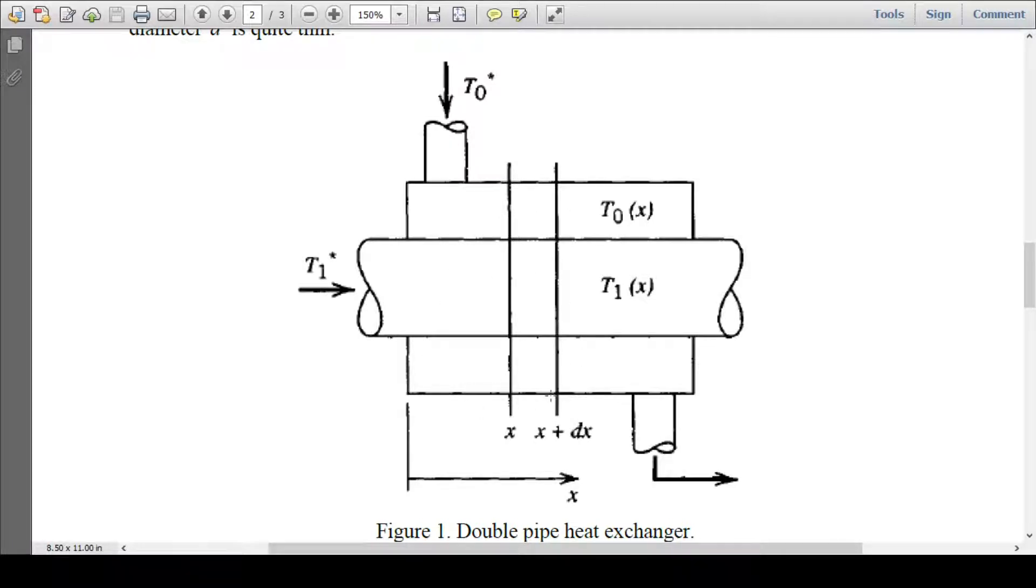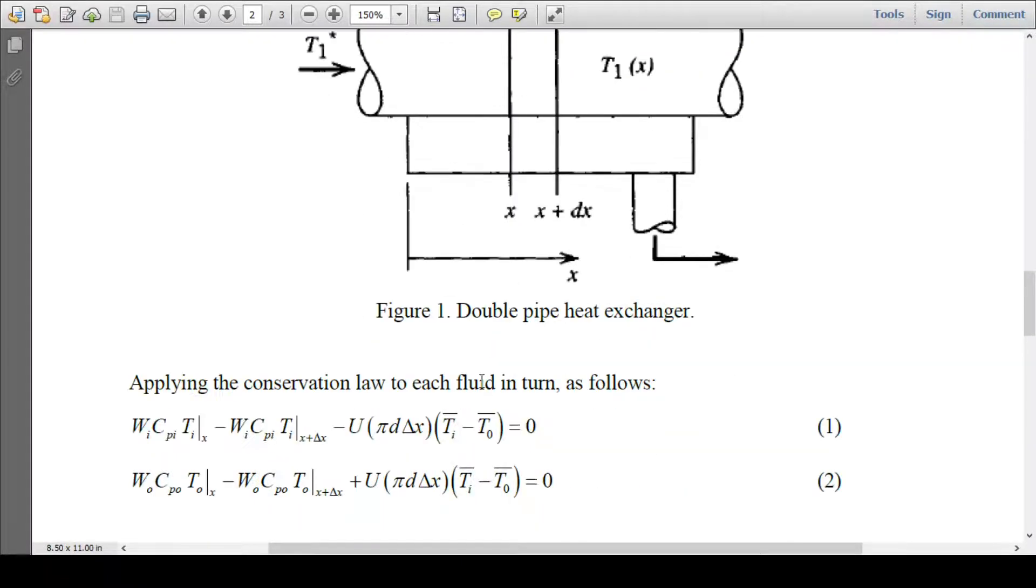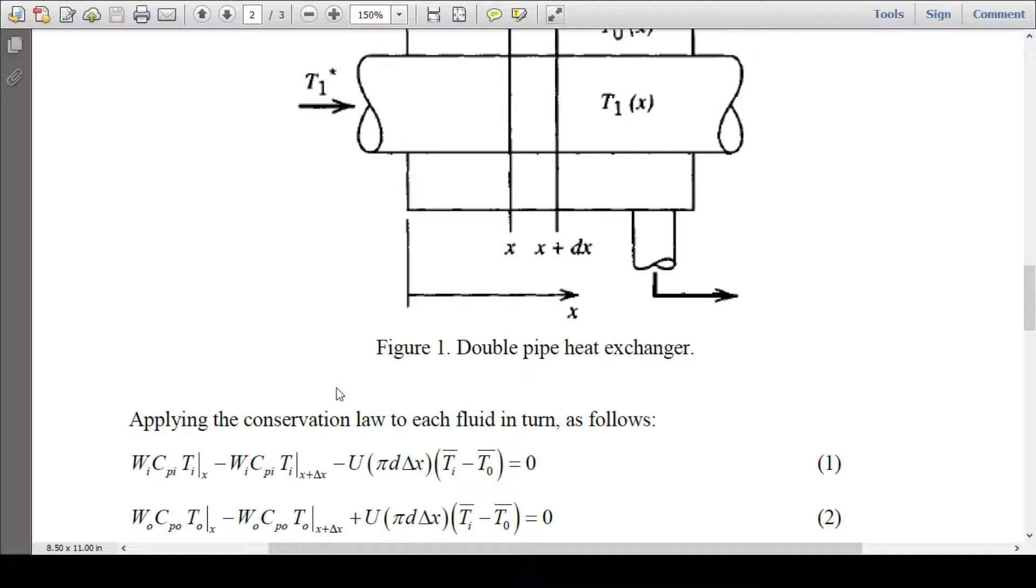We have taken a differential element at x and x plus delta x. If we apply the energy balance in this particular differential element, this is the energy coming in with distillate: WI CPI TI x.